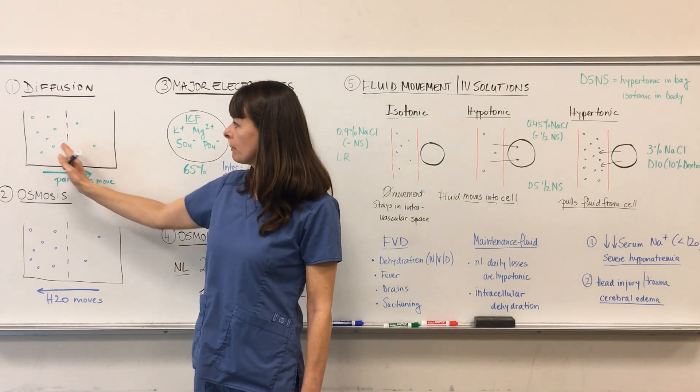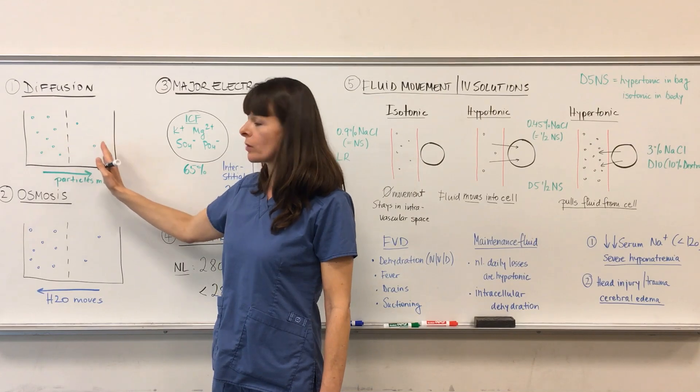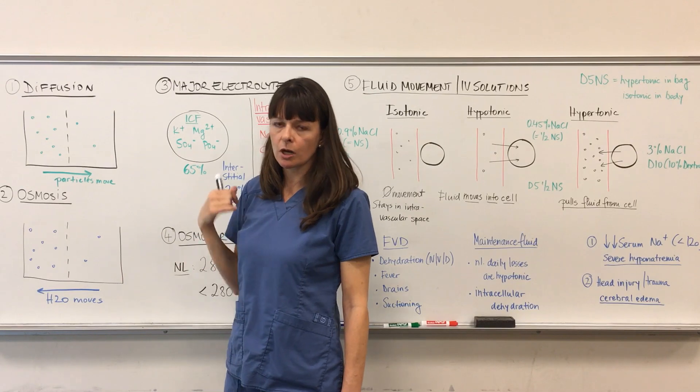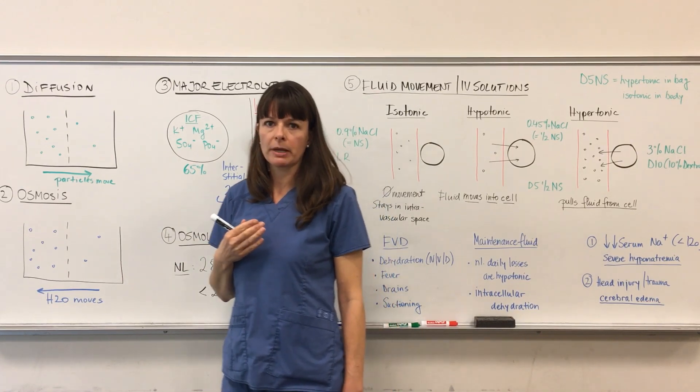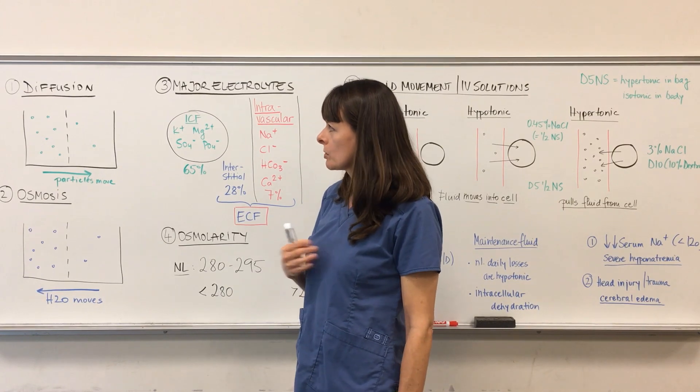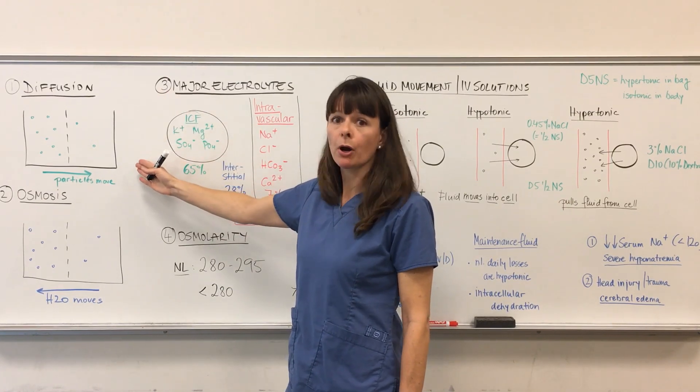Reason being that the body, as diffusion applies to the human body, the body always strives for homeostasis or balance. So the semi-permeable membrane here always tries to equalize both sides of the fluid compartments, and we'll talk later on how this applies to the patient and intracellular, extracellular fluids. So remember diffusion, particles move.